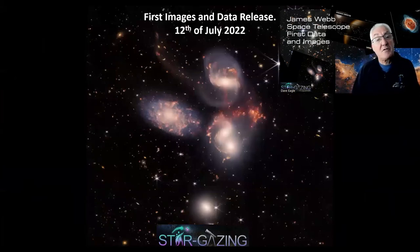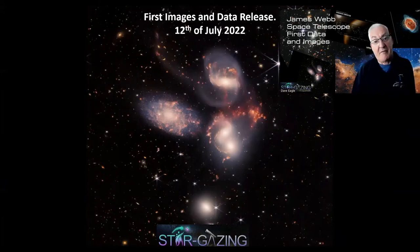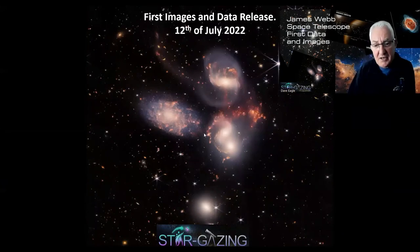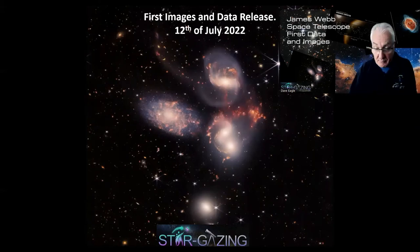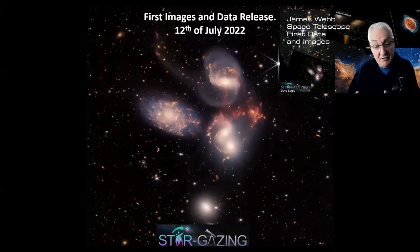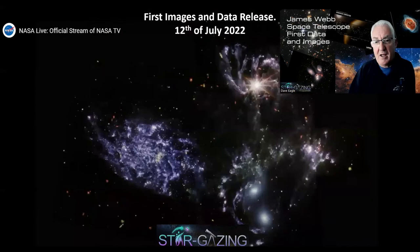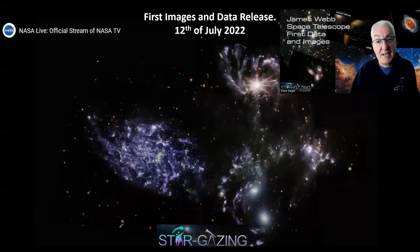Stephan's Quintet is an object I know quite well - I've tried to image it myself, not very successfully. These five interacting galaxies show that the interaction between them is causing starburst formation - the red hydrogen-alpha areas show where shock waves from the galaxy interaction have set off more star production, building up nurseries of stars. In a different filter you can also see a very bright object in the middle of one of the galaxies - that's actually a black hole that has been identified there.